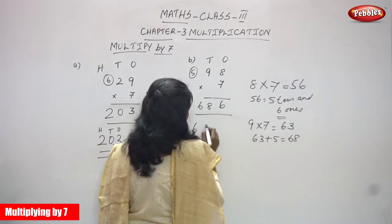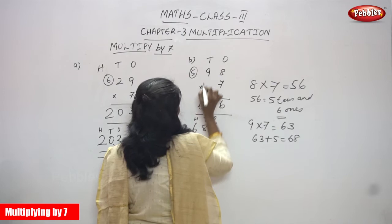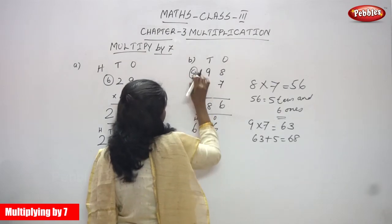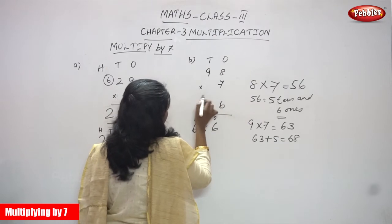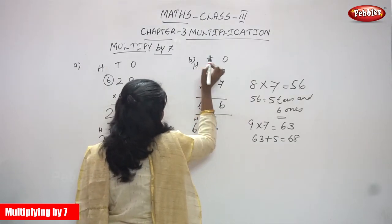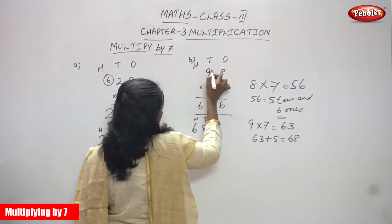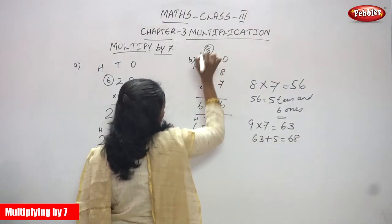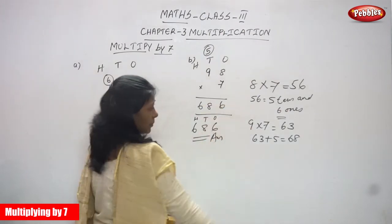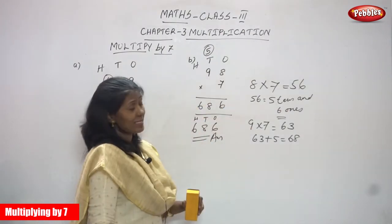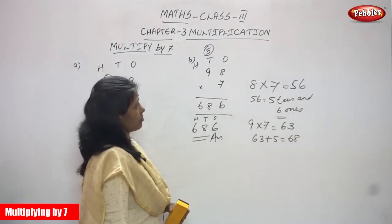The answer is 686. This is ones, this is tens, and this is hundreds. The 6 goes in the hundreds place. So the answer is 686 — that is the right answer for the question. I think you understand the 2-digit by single-digit multiplication.